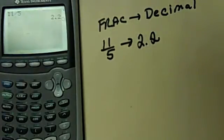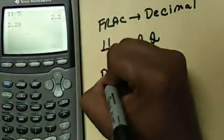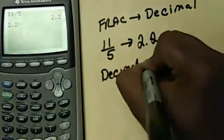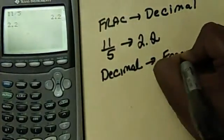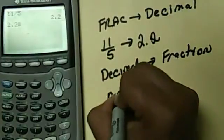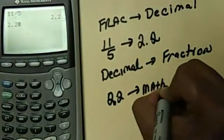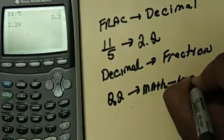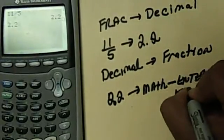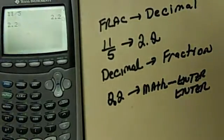If I had a decimal, in essence 2.2, and I wanted to change that decimal to a fraction, again, this is the place where we hit math and we hit enter twice. So math, enter, enter, changes any decimal into a fraction.